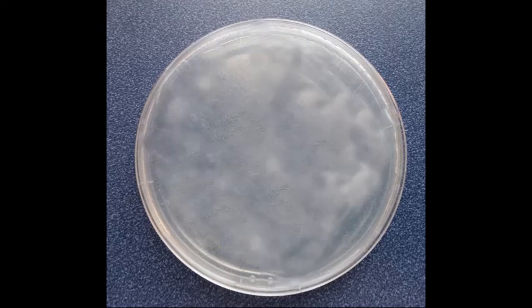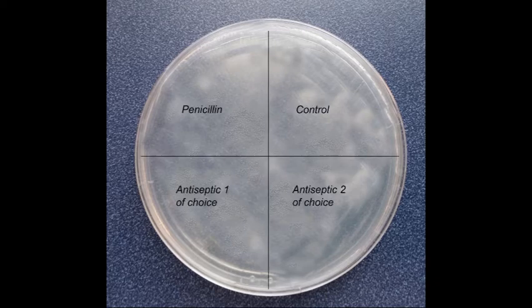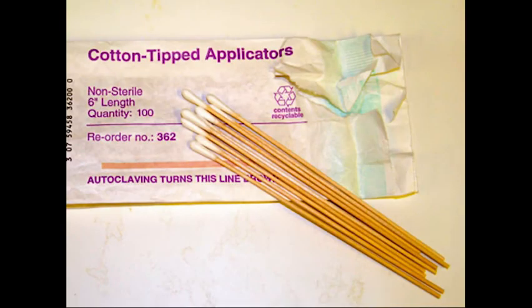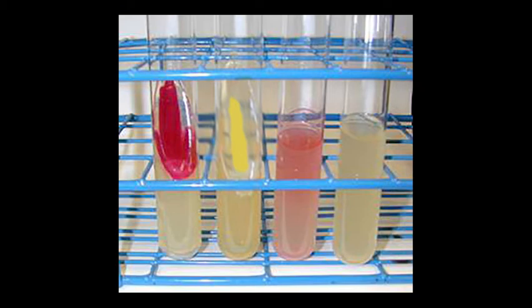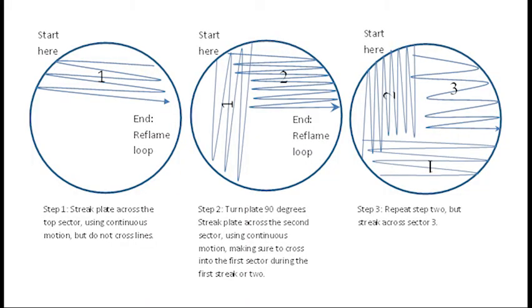Procedure. Use a petri dish that has sterile nutrient agar. Keep it sterile by not lifting the cover. Turn the petri dish upside down and with a marker divide it into four quadrants. Label each quadrant with the test material to be used. Return the petri dish to its upright position. Using a sterile cotton swab, collect bacteria from the Micrococcus luteus culture tube. Gently streak the entire surface of the plate horizontally, vertically, and around the edges.